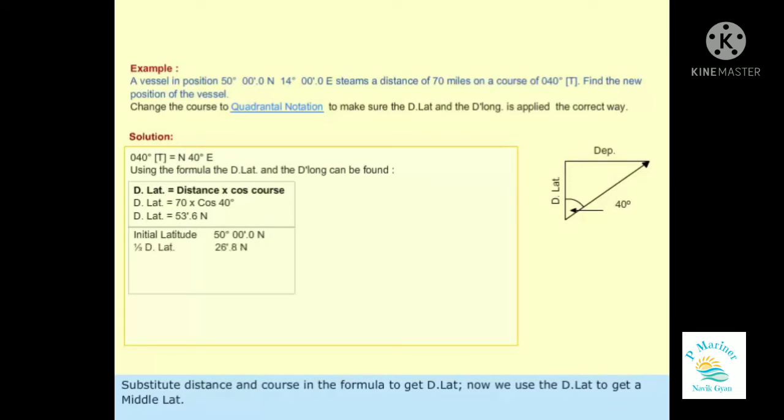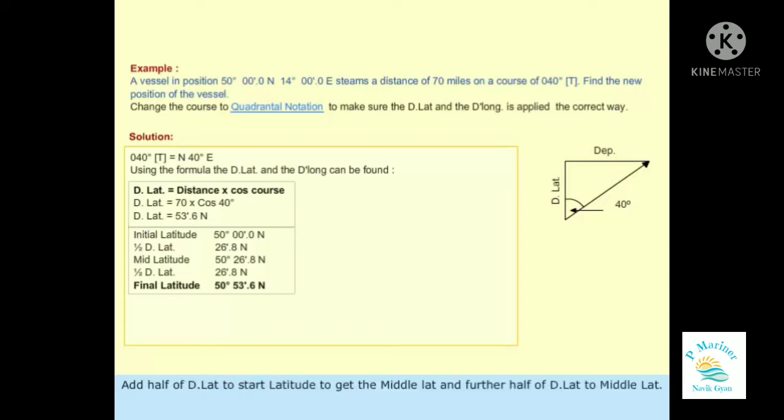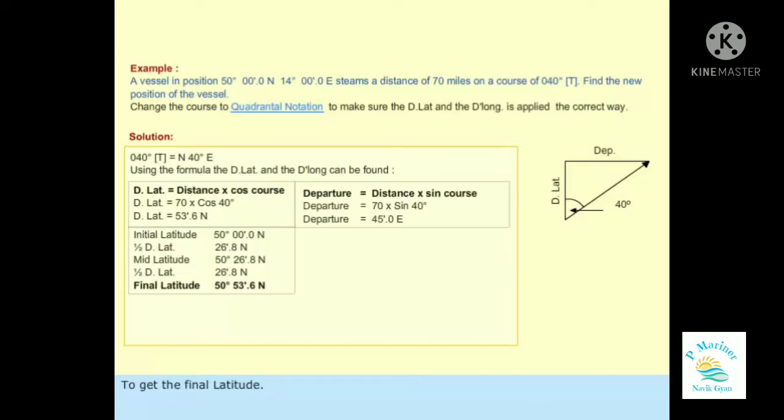Now we use the DLat to get a middle lat and final latitude as follows: Add half of DLat to start latitude to get the middle lat, and further half of DLat to middle lat to get the final latitude.